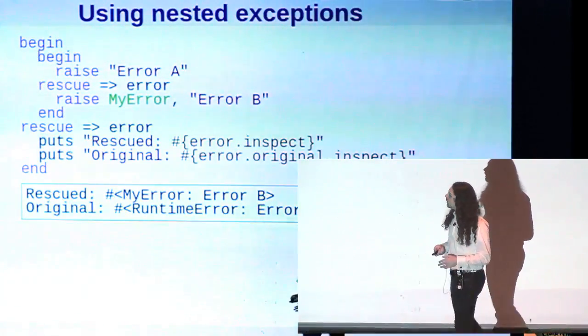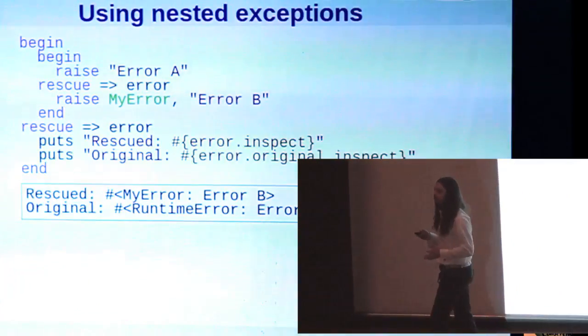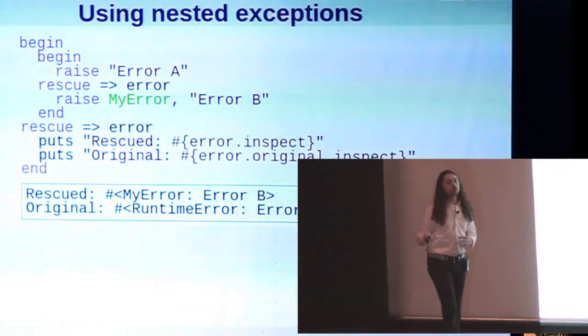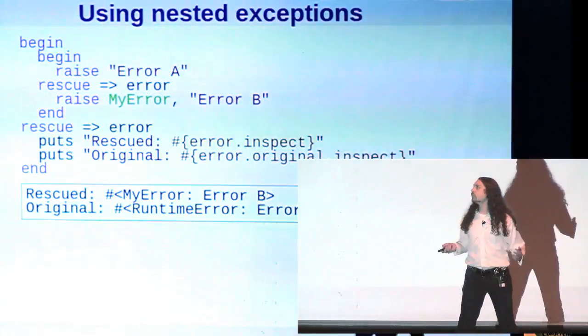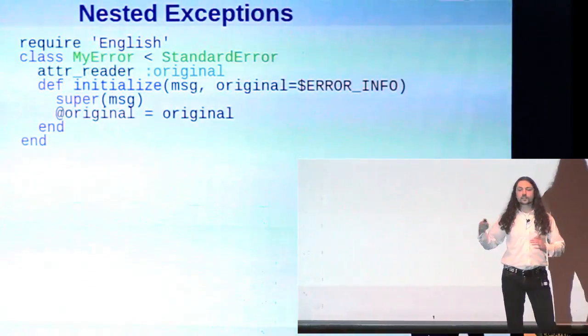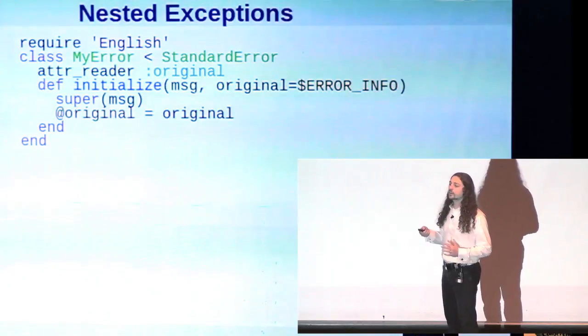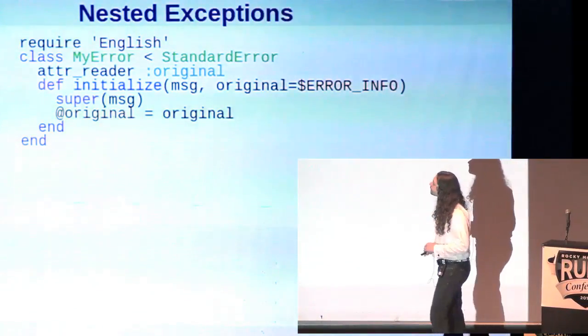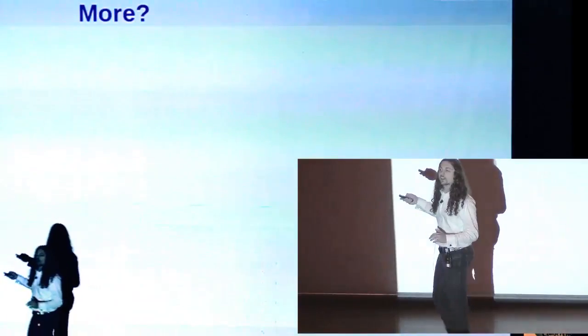Here's an example of using that. We raise error A and then we rescue it and then we raise error B and then we rescue that and then we inspect the resulting error and what we see is that the exception that we rescued is error B, but it also has a reference to error A. Now wait a minute. We didn't actually set that reference. We didn't say error B, here's your reference to the original. How does this work? Well, if you look at how this class is defined, the default for that original attribute is error info. And so what this has done is it has automatically picked up the current exception from the environment where it was created.